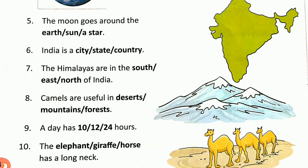Number 5: The Moon goes around Earth, Sun or a star? Yes, the Moon goes around the Earth. Very good. Number 6: India is a city, state or country? India is a country — the one which we live in.